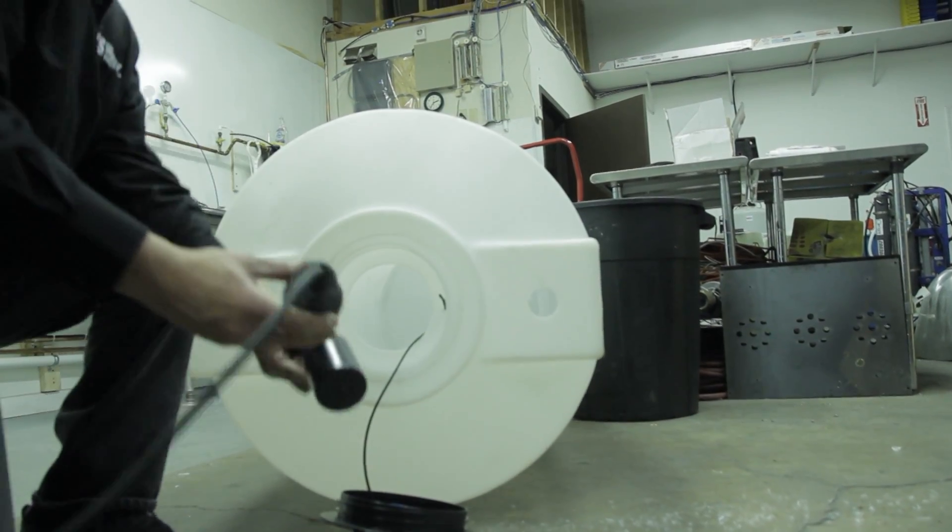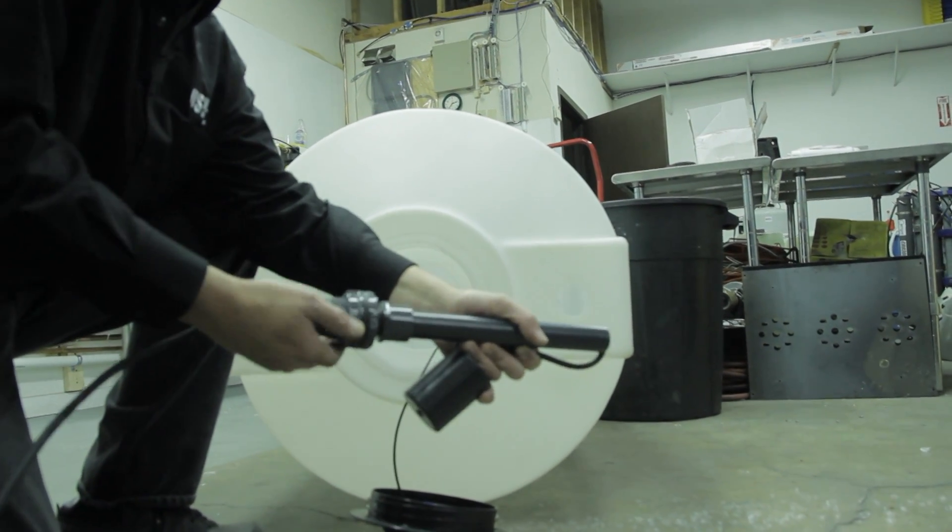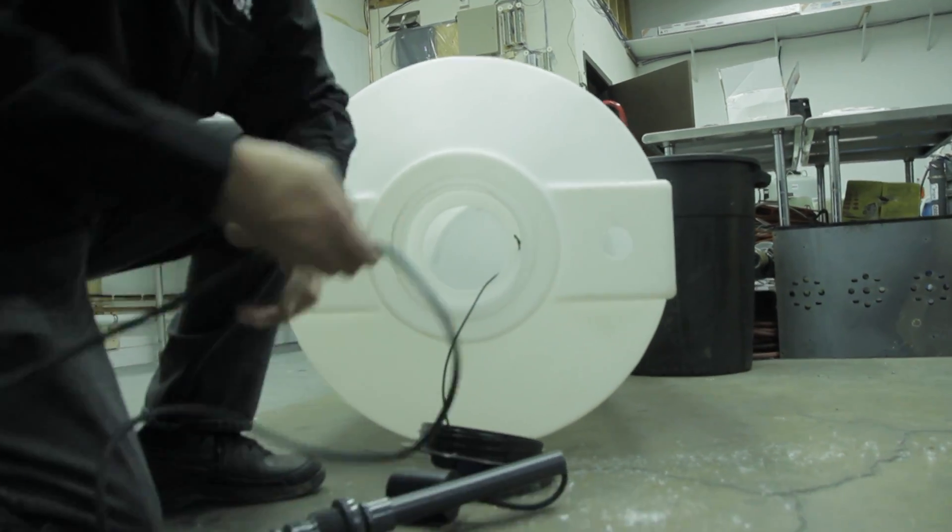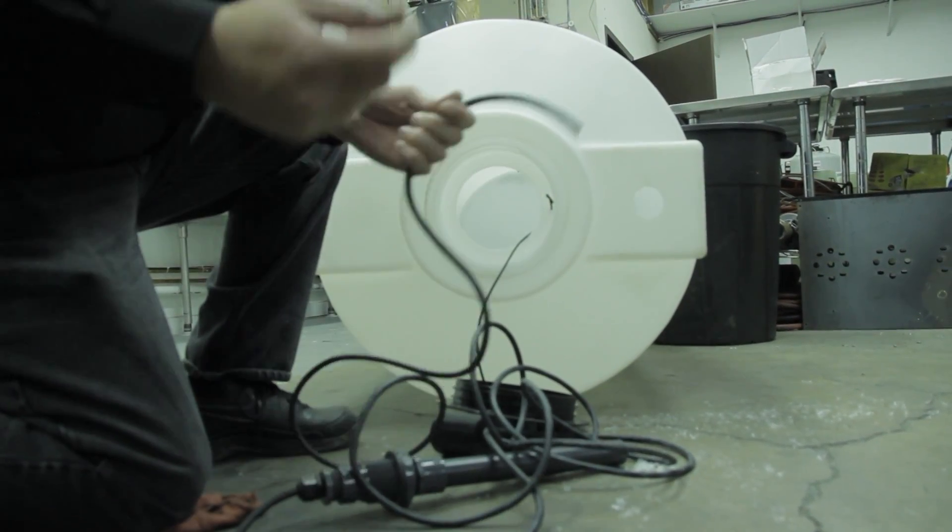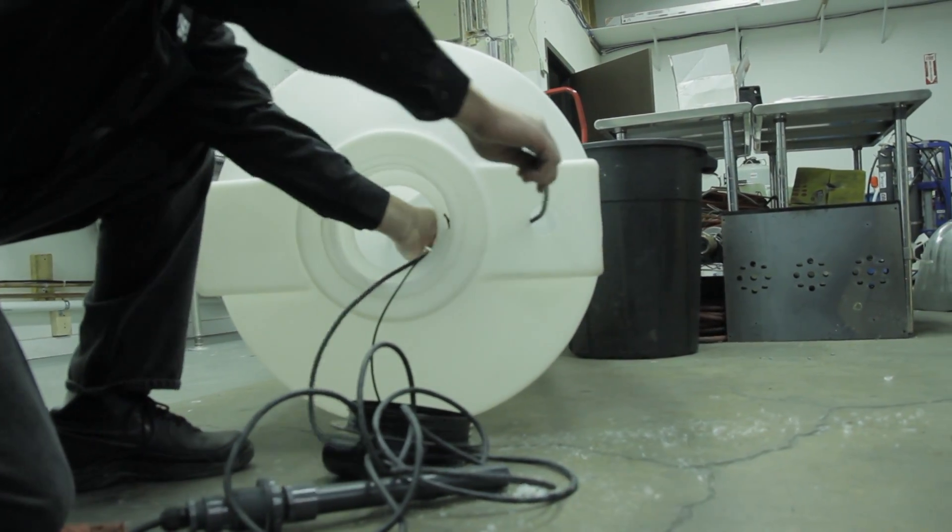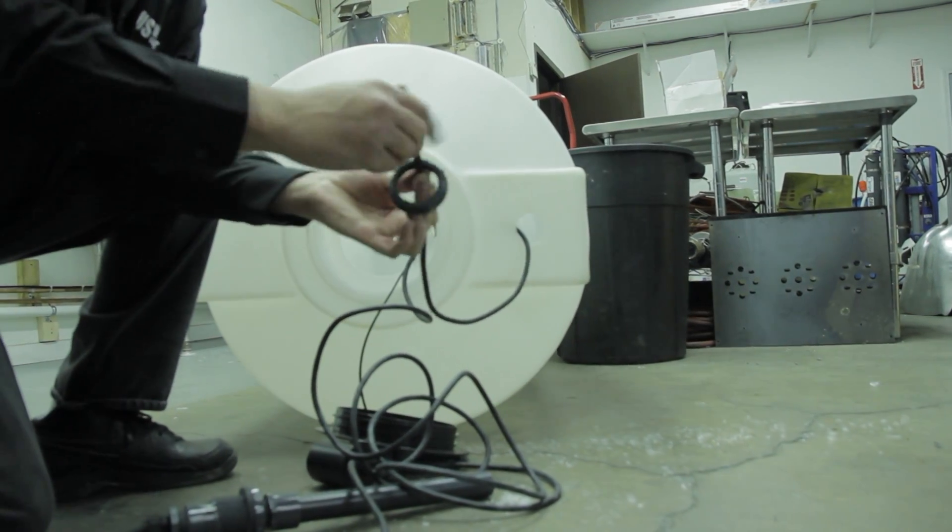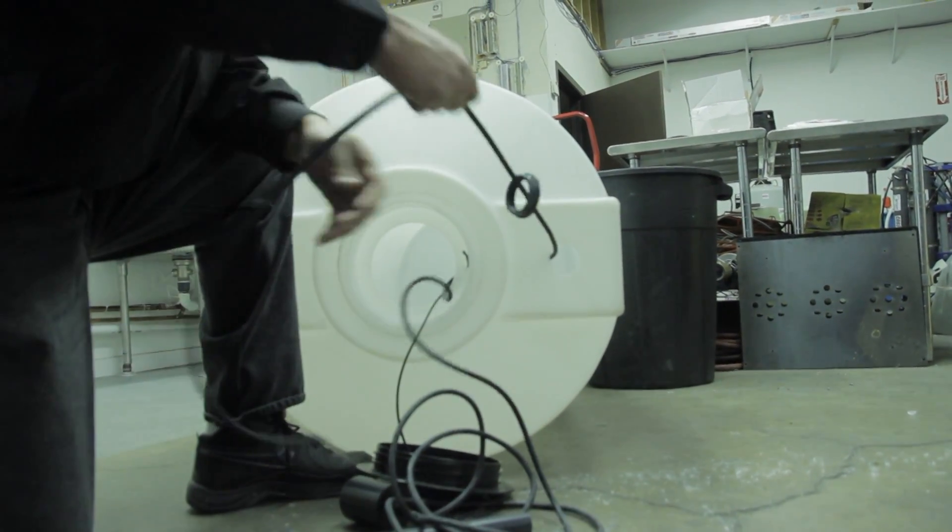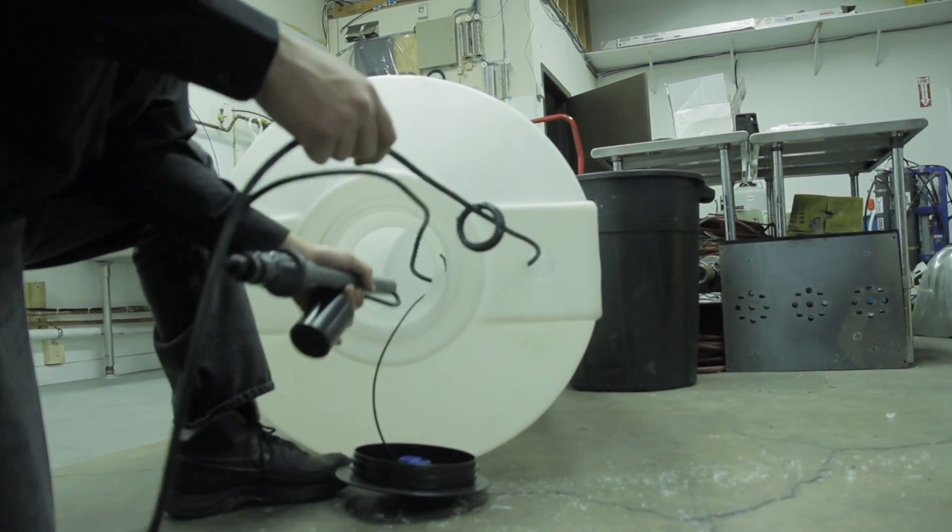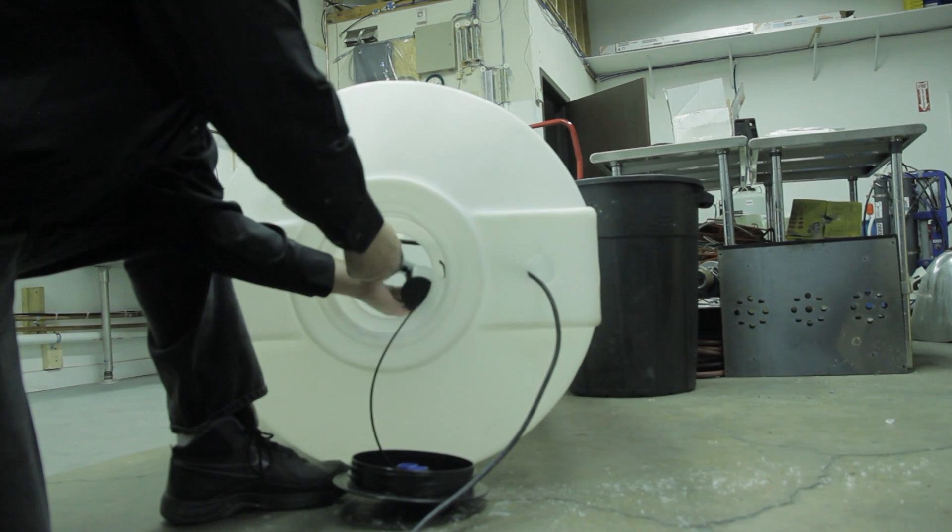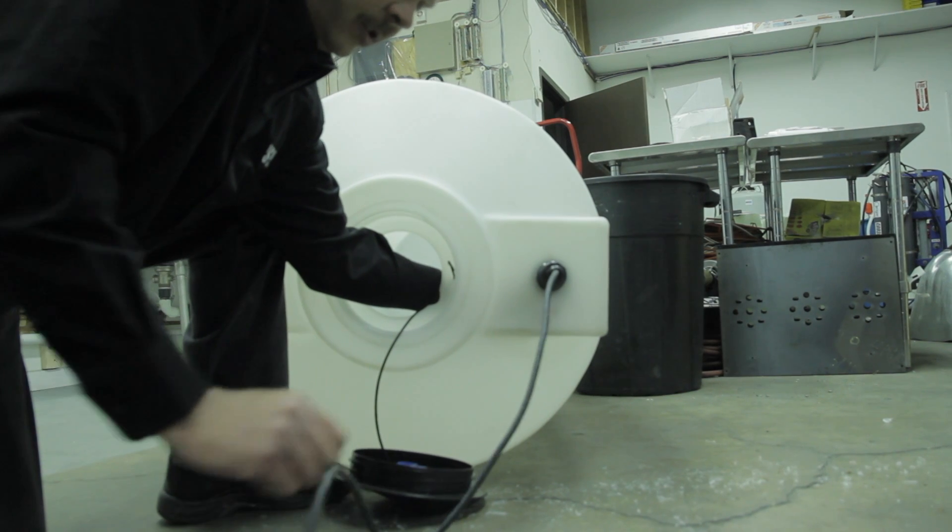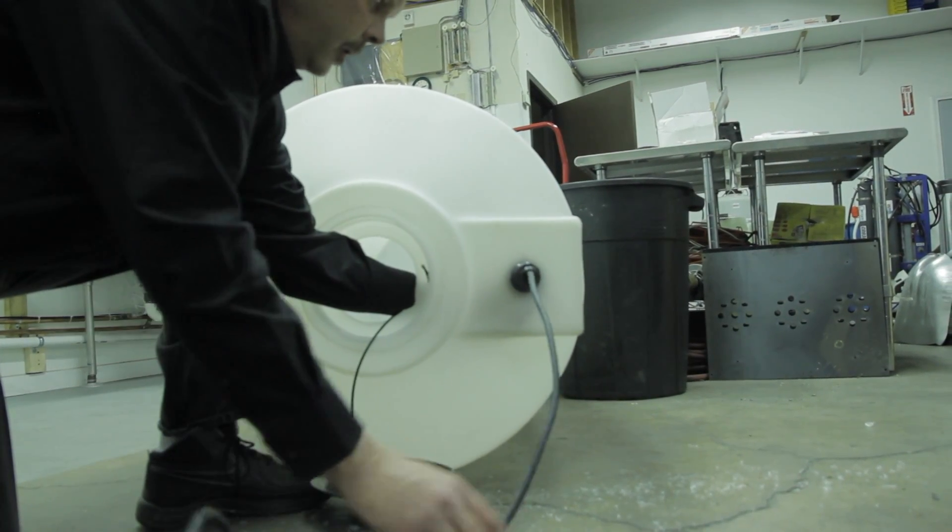When you install the float switch, on the bulkhead fitting there'll be a nut. You're going to spin this nut off completely. Take your cord, run it through the tank and through the hole. You can go ahead and put your nut back over top of it because that nut's going to wait there until we get the switch completely installed. Pull your wire completely through, stick your whole float switch in the tank, pull it through, and install the nut.